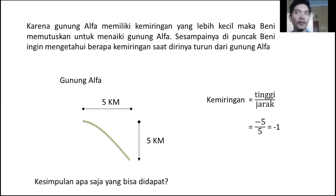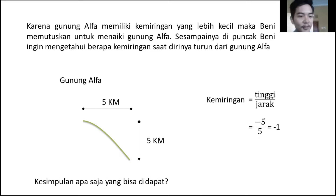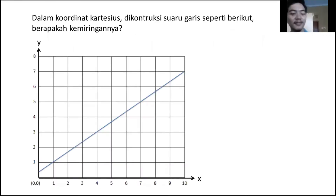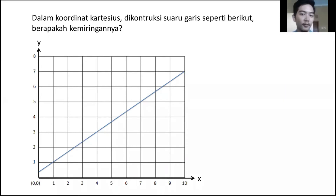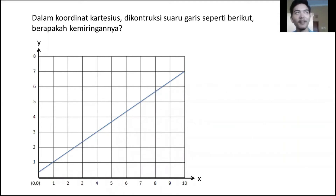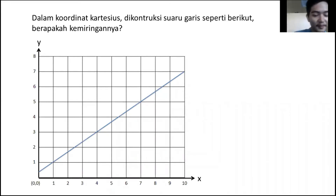Inilah konsep dasar dalam garis — garis itu ada kemiringan. Diharapkan teman-teman bisa memahami cara menghitung kemiringan dari suatu garis. Kita akan langsung masuk kepada soal yang matematis. Inilah kurang lebih gambaran mengenai soal dalam bentuk matematik. Dalam koordinat Cartesius dikonstruksi suatu garis seperti berikut — berapakah kemiringannya?